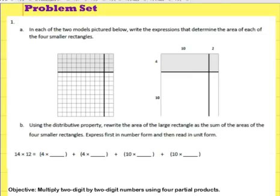So let's look at a question from the problem set. It says, In each of the two models pictured below, write the expression that determines the area of each of the four smaller rectangles. So essentially, for this first block here, I have one rectangle that's been divided into four parts. This is one of the parts, this is one, this is one, and this is one.